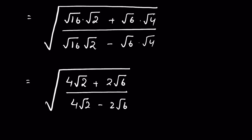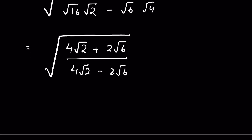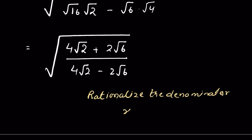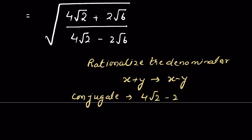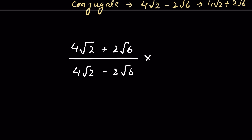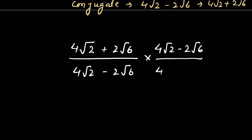Upon 4 times square root of 2 minus 2 times square root of 6, all under a square root. Now we have to rationalize the denominator because in the denominator we have radicals. To rationalize the denominator we multiply and divide by the conjugate of the denominator. The conjugate of x plus y is x minus y, so the conjugate of 4 times square root of 2 minus 2 times square root of 6 will be 4 times square root of 2 plus 2 times square root of 6. So we multiply and divide by the conjugate.